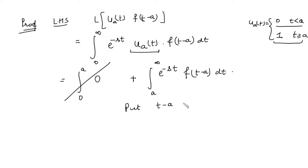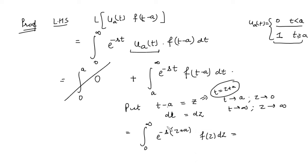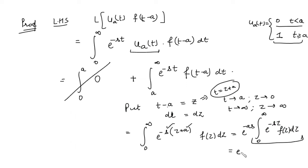We apply the substitution z = t - a, so dz = dt. As t approaches a, z approaches 0; as t approaches infinity, z approaches infinity. The integral becomes the integral from 0 to infinity of e^(-s(z+a))·f(z) dz. We can factor out e^(-as) since it is independent of z, giving e^(-as) times the integral of e^(-sz)·f(z) dz, which is e^(-as)·F(s). This is the right-hand side, completing the proof.